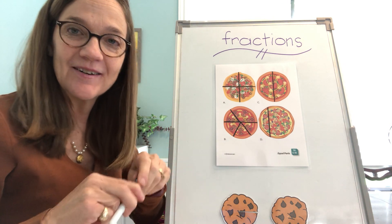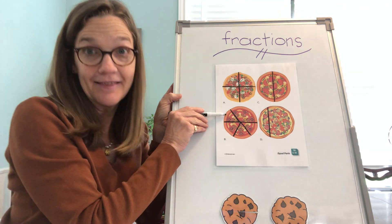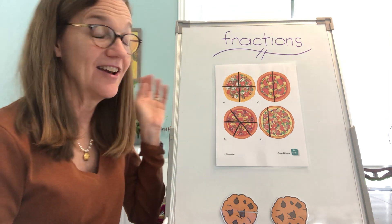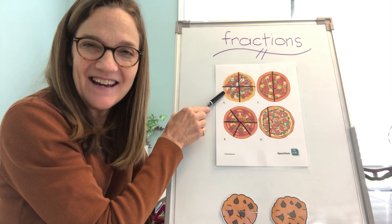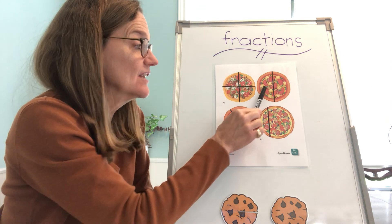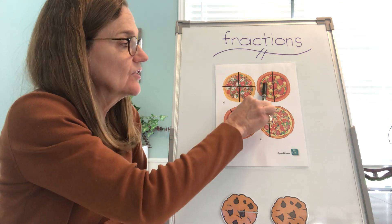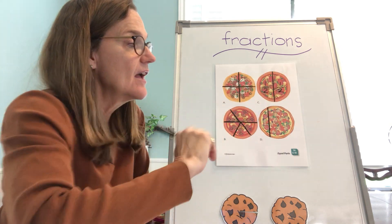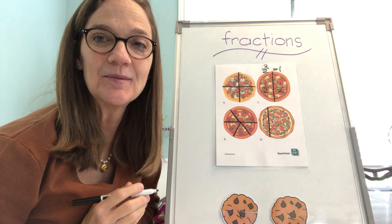Your mom picks up pizza for supper. You get this piece, dad gets this piece, your brother gets this piece, I get this piece, and mom gets this piece. Are those equal pieces? They're not. So the pizzas that have been divided into equal pieces are pizza A, because it has one, two, three, four pieces, and pizza C has been divided into two equal pieces. That's what our fractions are all about — equal pieces. We say this is one half of this pizza, and this is the other half. Two halves is the same thing as one whole pizza.